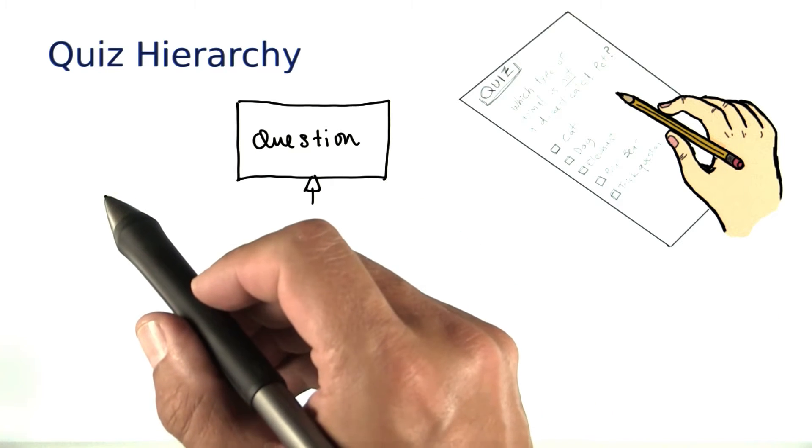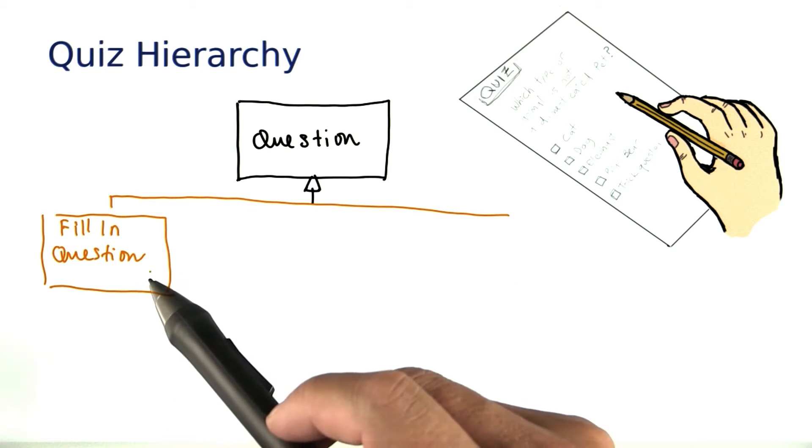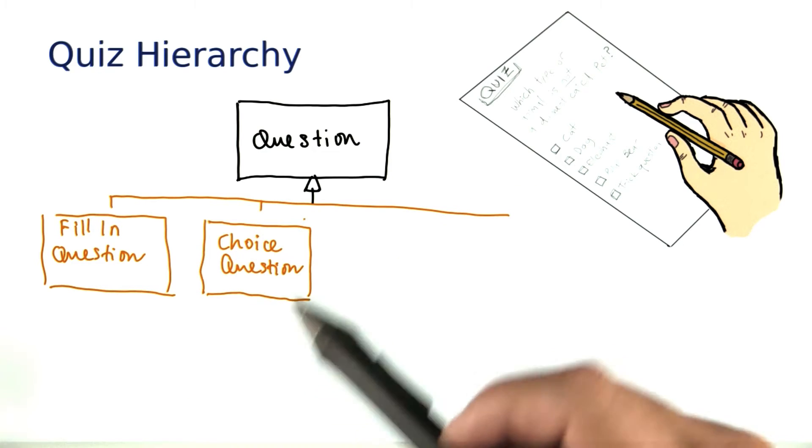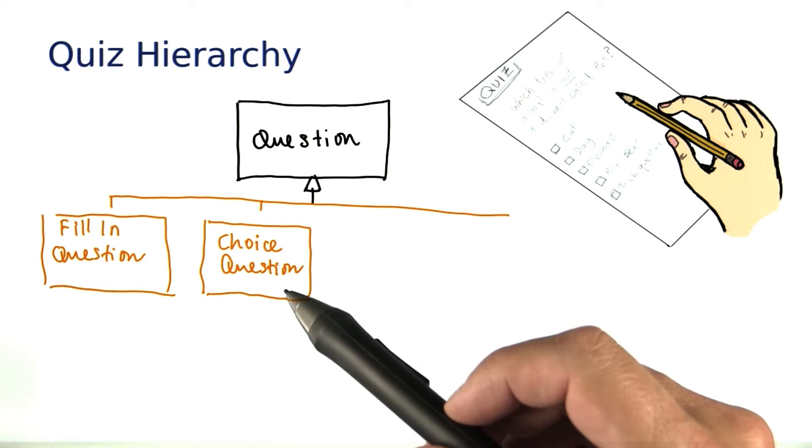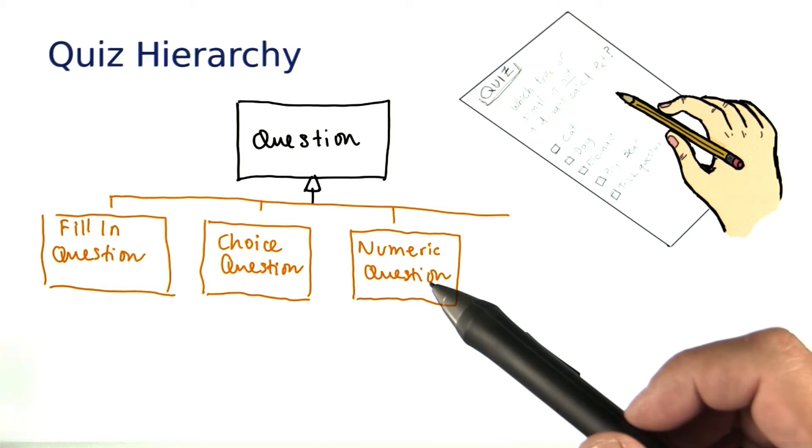And then you may have various subclasses, maybe a question where you need to fill in a missing word, or a question where you're given a bunch of choices, or one where you have to supply a number, but it might be okay if it's not exactly the right answer. A numeric question might take round off into account, and so on.